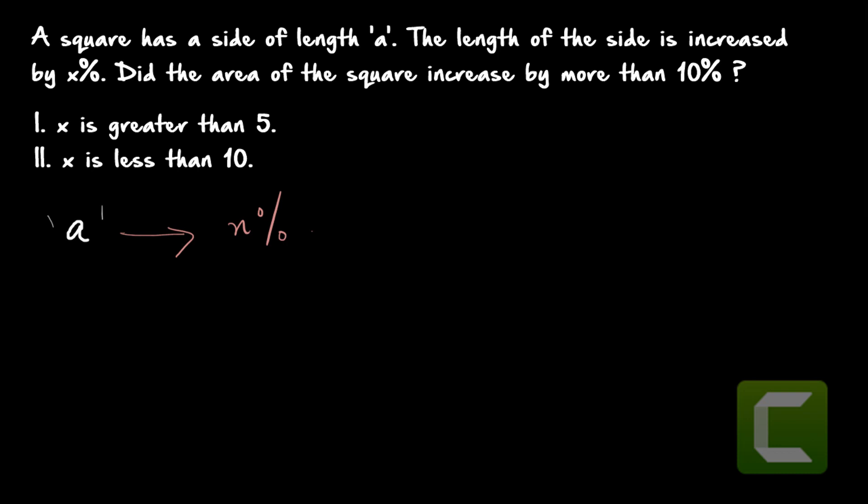First, understand how area changes when the side increases by x%. The area of the square equals a² (side squared). When the side of the square increases by x%, the area of the square will increase by 2x%. This is the key concept here.